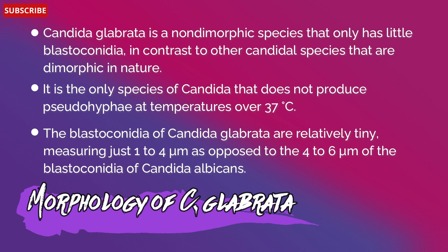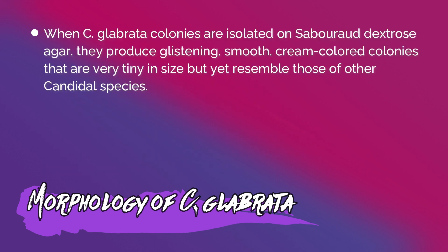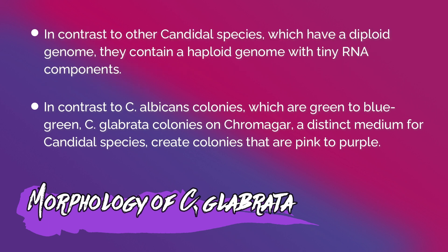This is as opposed to the 4 to 6 micrometers of blastoconidia of Candida albicans. When Candida glabrata colonies are isolated on Sabouraud dextrose agar, they produce glistening, smooth, cream-colored colonies that are very tiny in size. In contrast to Candida albicans colonies which are green to blue-green, Candida glabrata colonies on chromagar are pink to purple.